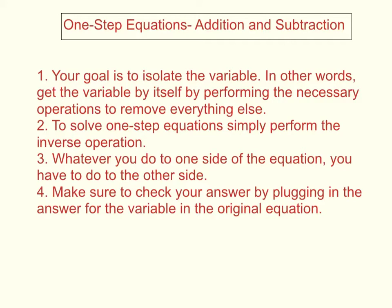So I wrote some steps out here for you. Number one, your goal is to isolate the variable. In other words, get the variable by itself by performing the necessary operations to remove everything else. Number two, to solve one-step equations, simply perform the inverse operation. I'll explain what that means in just a second. Number three, whatever you do to one side of the equation, you have to do to the other side. And number four, make sure to check your answer by plugging in the answer for the variable in the original equation.